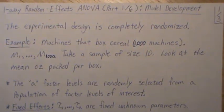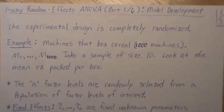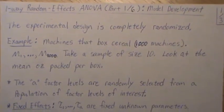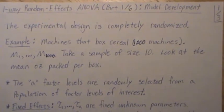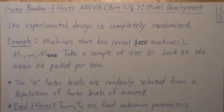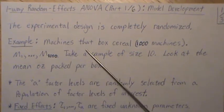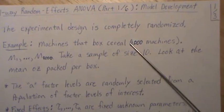Hello, this is the next video in a playlist I'm calling General Linear Models Design of Experiments. This next mini series is going to deal with one-way random effects ANOVA. This is part one of six — I'm calling it model development — and the experimental design is completely randomized.